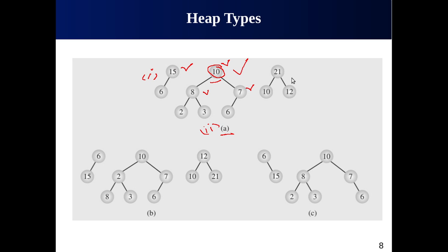Third example: shape is a complete binary tree, both children present, parent value is greater than both children 10 and 12, and the largest value is at the root — it is also an example of a binary heap. Fourth example: the shape is okay (left child present), but the second property is not satisfied — 6 is not greater than 15 in a max heap — so it is not an example of a binary heap.